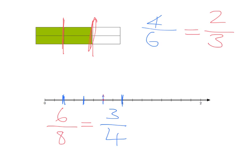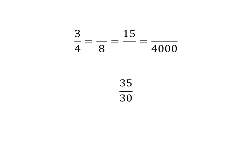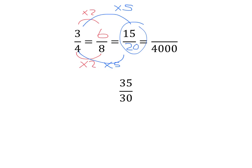We get equivalent fractions by multiplying or dividing the top and the bottom of the fraction by the same thing. Let's look at how we can get fractions equivalent to three-quarters. To get from four to eight, you multiply by two, so you do the same to the three and get six-eighths. For the next one with 15 in the numerator: you've multiplied three by five, so the denominator must also be multiplied by five — four times five is 20. And to get from four to four thousand, you multiply by a thousand, so three becomes three thousand. All these fractions are exactly the same number, just written in a slightly different way.